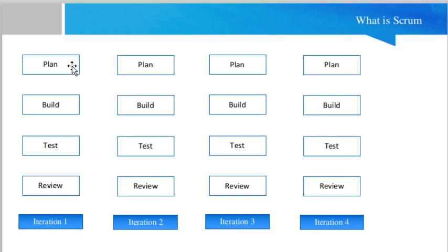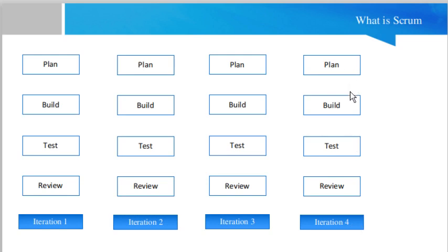Then in iteration two, you again do the plan, build, test, and review for the next ten tasks. Then in iteration three, you again plan, build, test, and review for the next ten tasks. Then in iteration four, it will contain all 40 tasks and you again do the plan, build, test, and review.